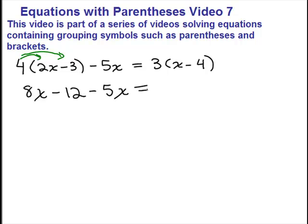And on the right-hand side, we're going to do the distributive property as well, multiplying 3 times x, which is 3x, and then minus 3 times 4. That's 12.